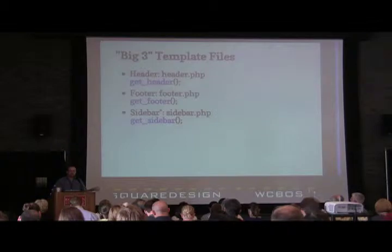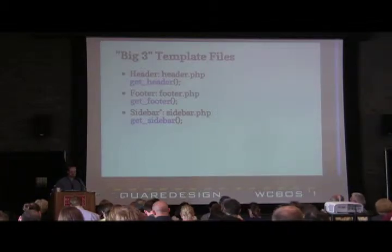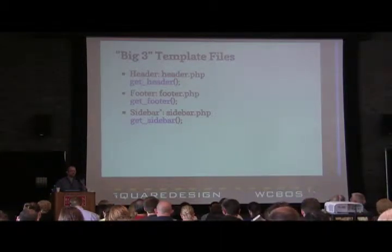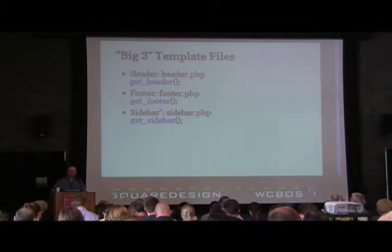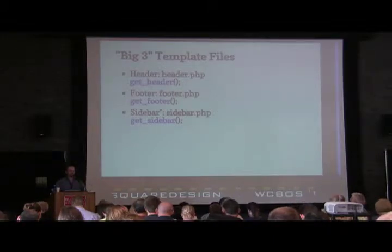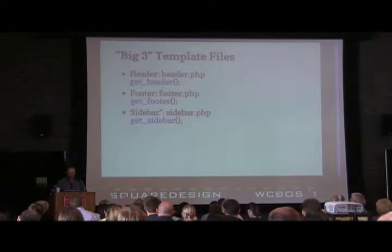I call these the 'big three' template files you'll find in any WordPress theme. The first is the header, which has its own WordPress template tag called get_header. Then there's the footer with get_footer, and the sidebar with get_sidebar. I'll talk a little more about sidebar in a few minutes.